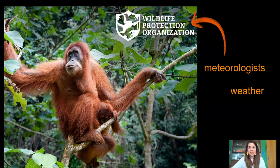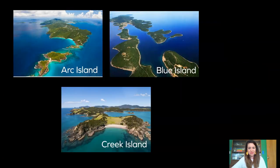We're going to be studying the weather of three islands to determine the best place to put a wildlife reserve for orangutans. Remember that a reserve is a protected area of land for animals to live. Now, here are the three islands we looked at last time: Arc Island, Blue Island, and Creek Island. We're looking for a place for the reserve that has a specific type of weather.